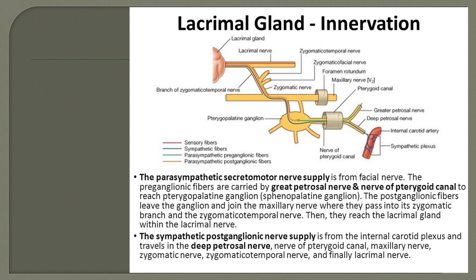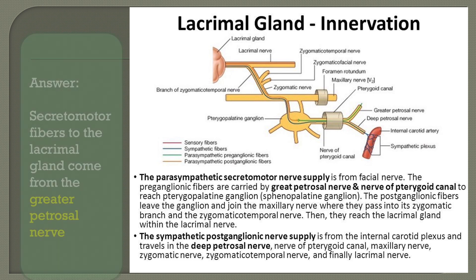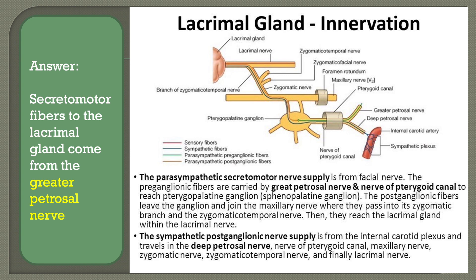So the sympathetic, parasympathetic, and sensory innervation of the lacrimal gland has been covered. The answer is that the secretomotor fibres to the lacrimal gland come from the greater petrosal nerve, not the deep petrosal nerve. There are four types of petrosal nerves: deep petrosal, greater superficial petrosal, lesser petrosal, and external petrosal. There is already a lecture on the different petrosal nerves uploaded in the neuroanatomy playlist — go and watch that video.